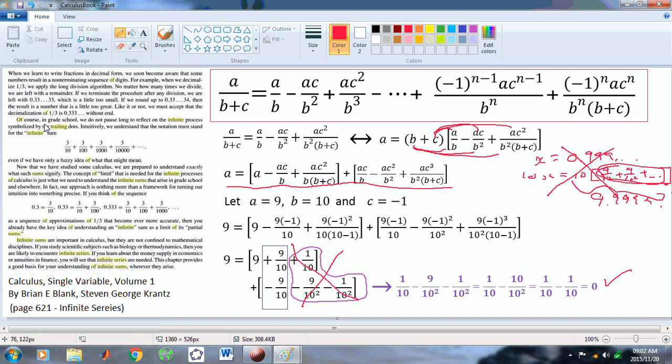But, if you read this extract here from Calculus Single Variable Volume 1 by Brian E. Blank and Stephen George Krantz on page 621 about infinite series, you'll see that mathematicians don't know what they're talking about. And, if you start over here, where it says, Of course, in grade school, we do not pause long to reflect on the infinite process symbolized by the trailing dots. Intuitively, we understand that notation must stand for the infinite sum. By the way, intuition is very, very dangerous.